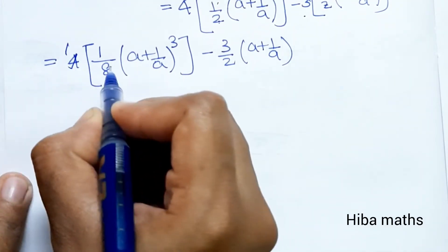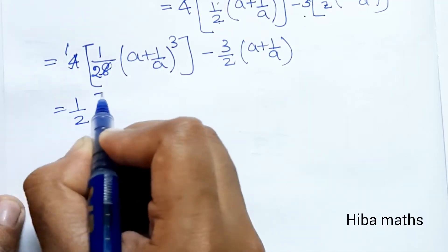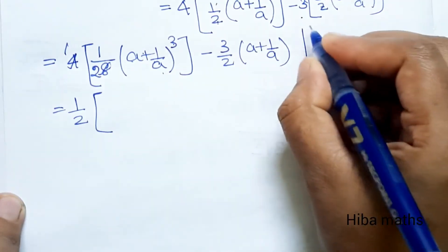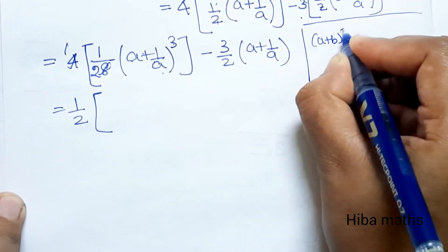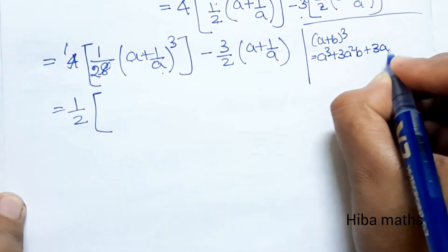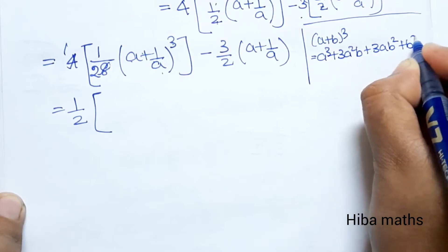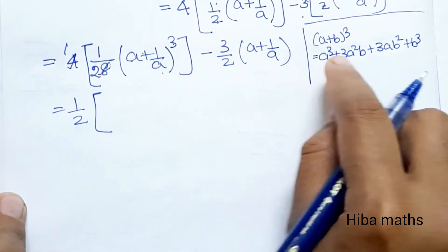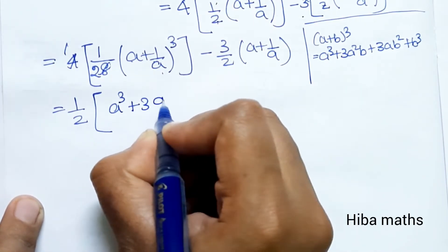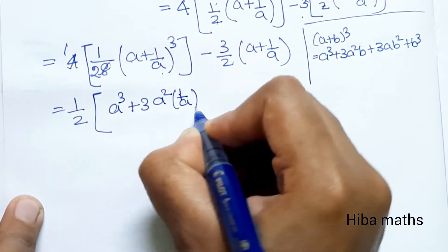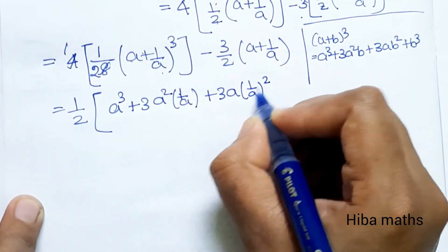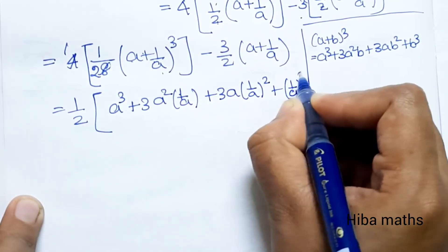Next, applying the (A plus B) whole cube formula: (A plus B) cube equals A cube plus 3A square B plus 3AB square plus B cube. Here B equals 1/A, so expanding: A cube plus 3 into A square into 1/A plus 3 into A into 1/A square plus 1/A cube.